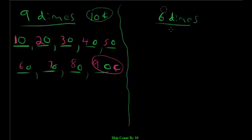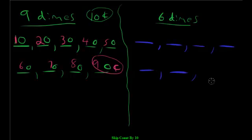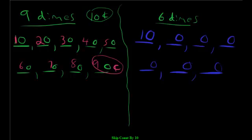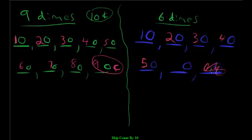Try this question on your own — pause the video if you want. With 6 dimes, start at 10 and write zeros on all of them. Then write 1, 2, 3, 4, 5, 6. That gives us 60 cents altogether.